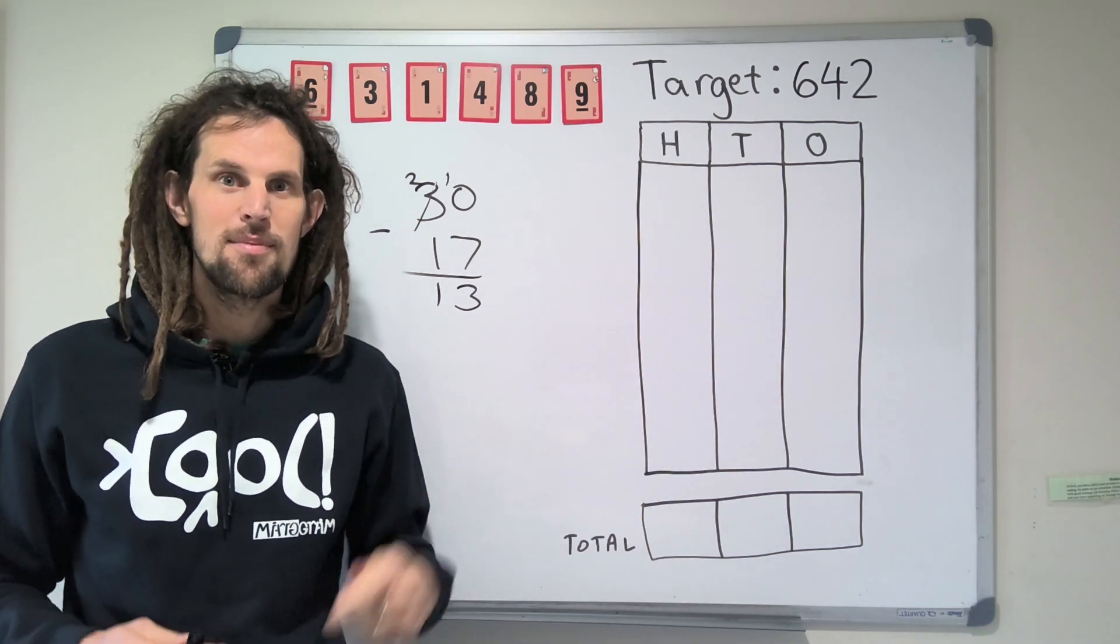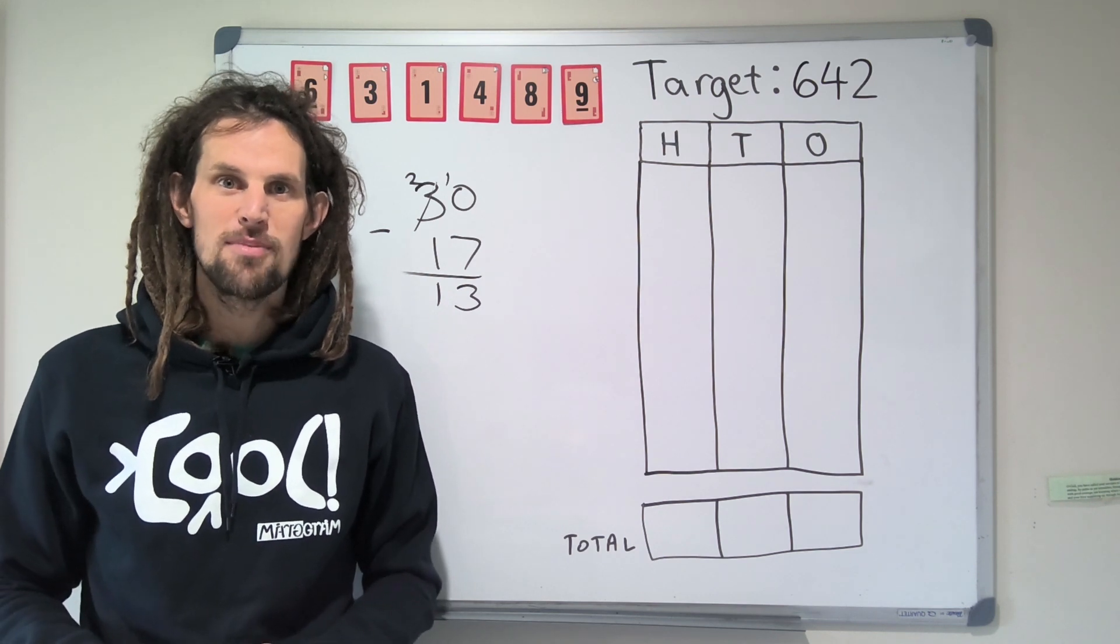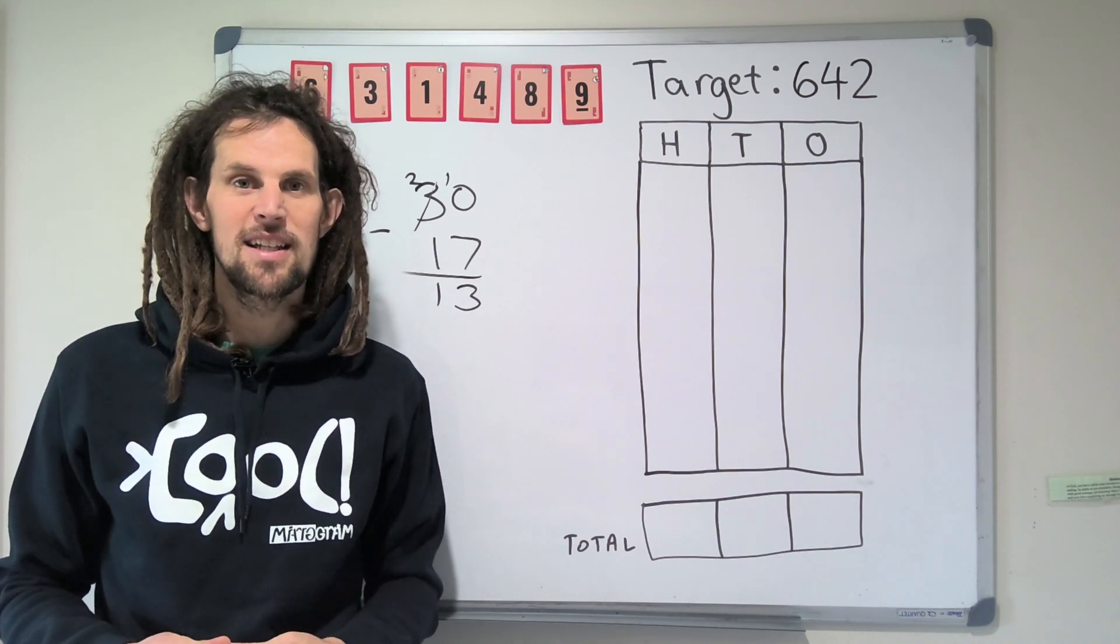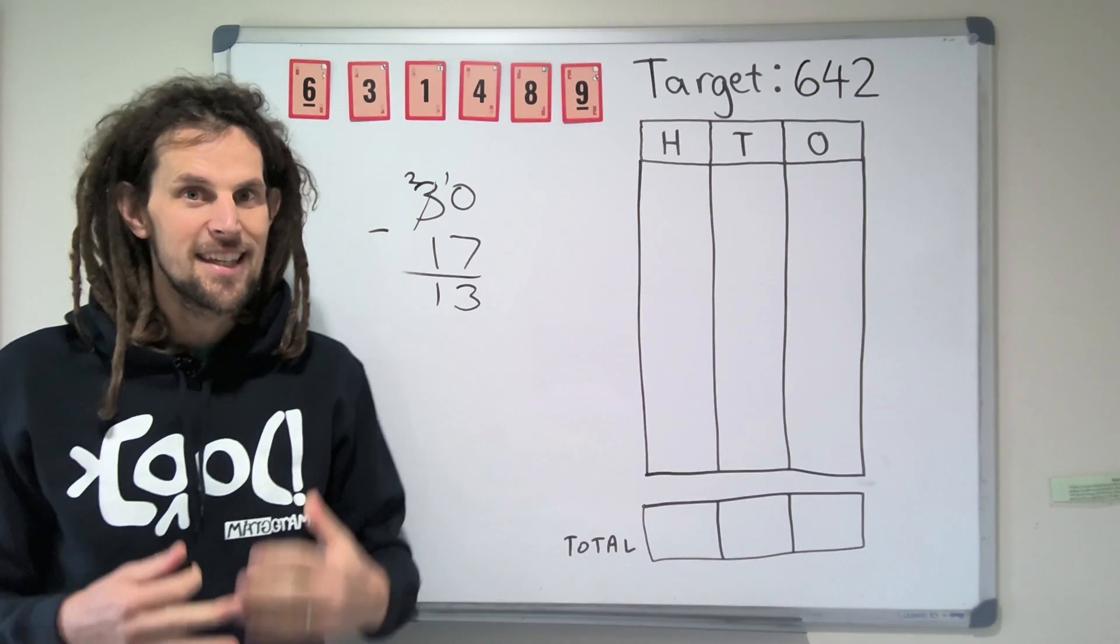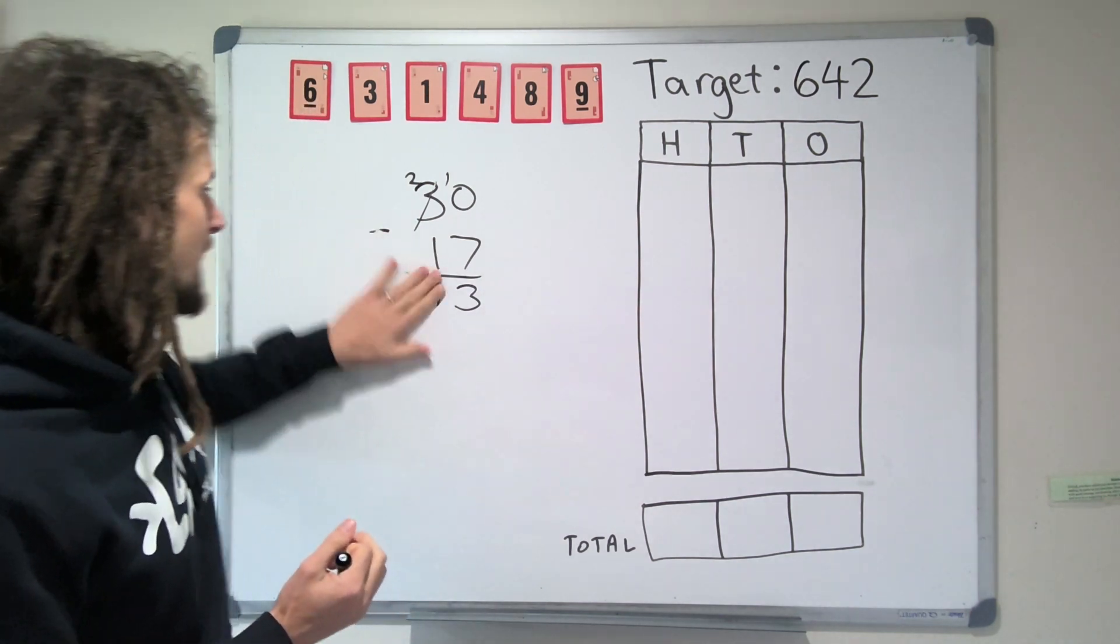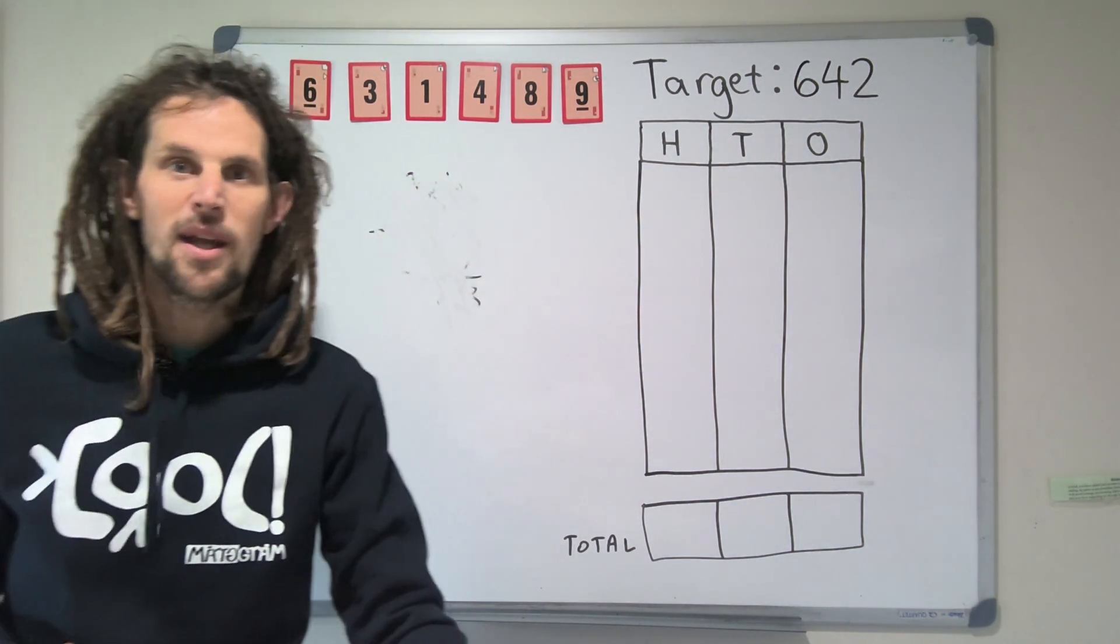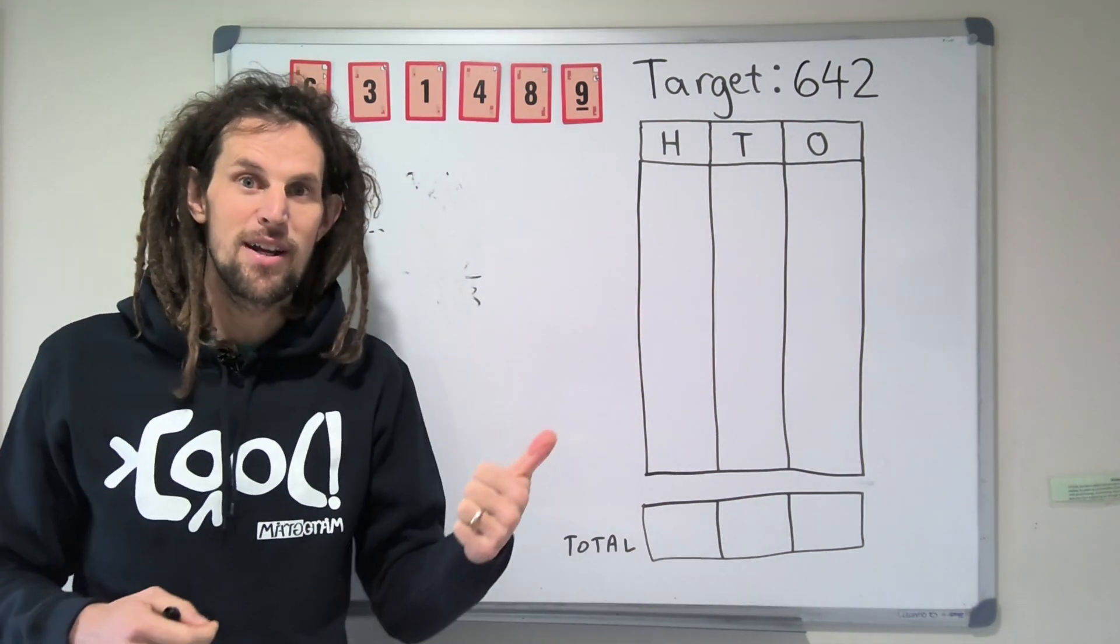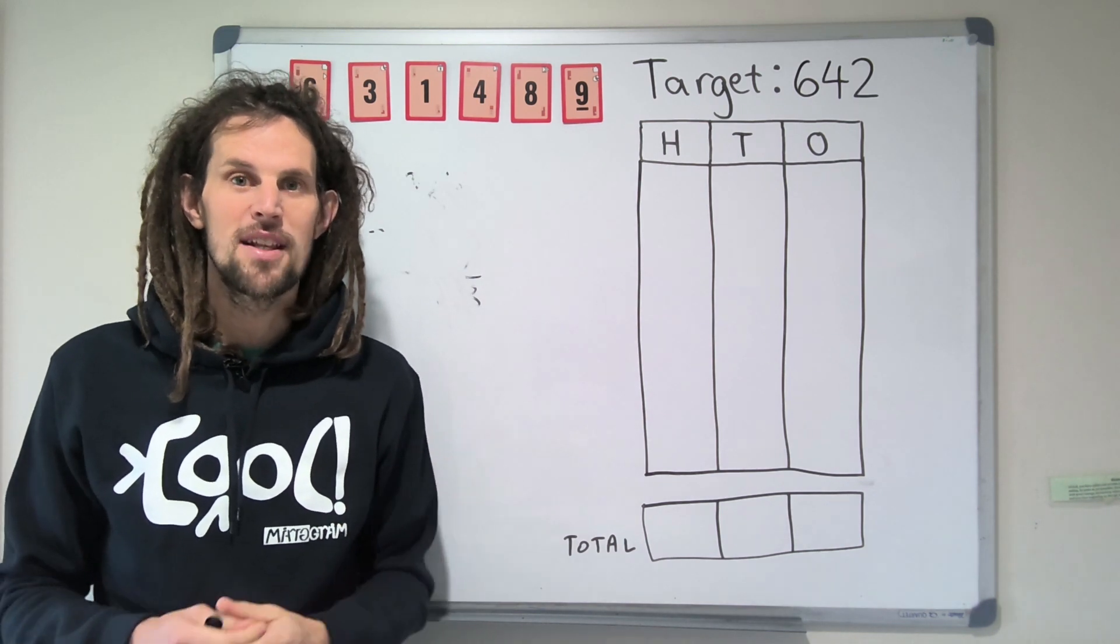This has also been observed by Dr. Anne Rogers, who's a bit of a place value guru here in Australia. Her observation is that kids are really great at being able to form numbers with base 10 blocks, so say for example, 300 and 75. We can do that by getting 300s, 7 tens, and 5 ones.